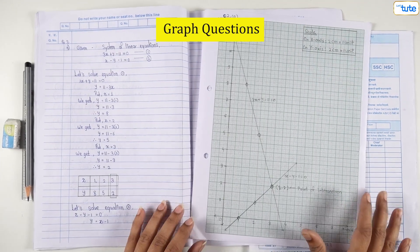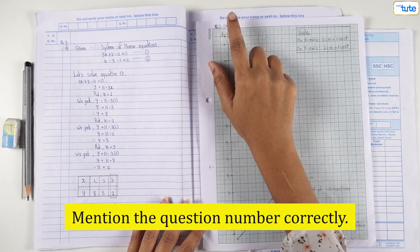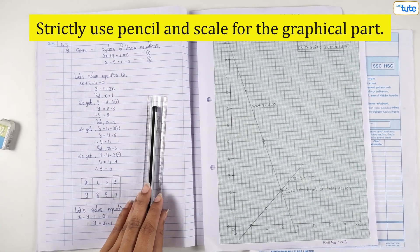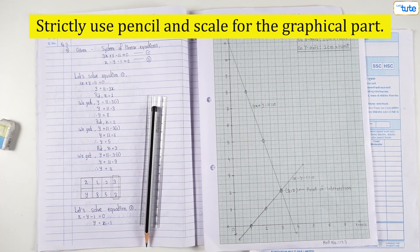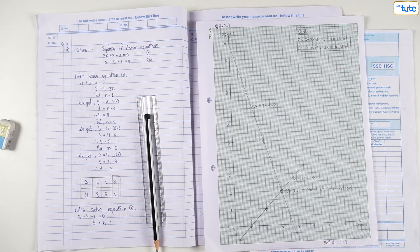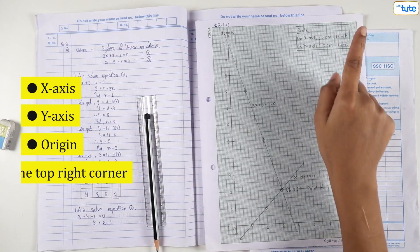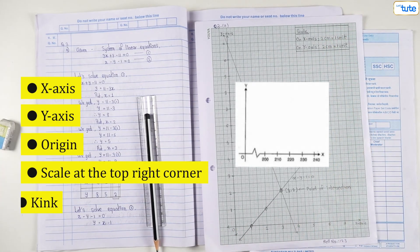Now, for graph questions, mention the question number correctly at the top without fail. Strictly use pencil and scale for the graphical part. Do not forget to mark the following things on the graph paper: x-axis, y-axis, origin, scale at the top right corner and a kink.